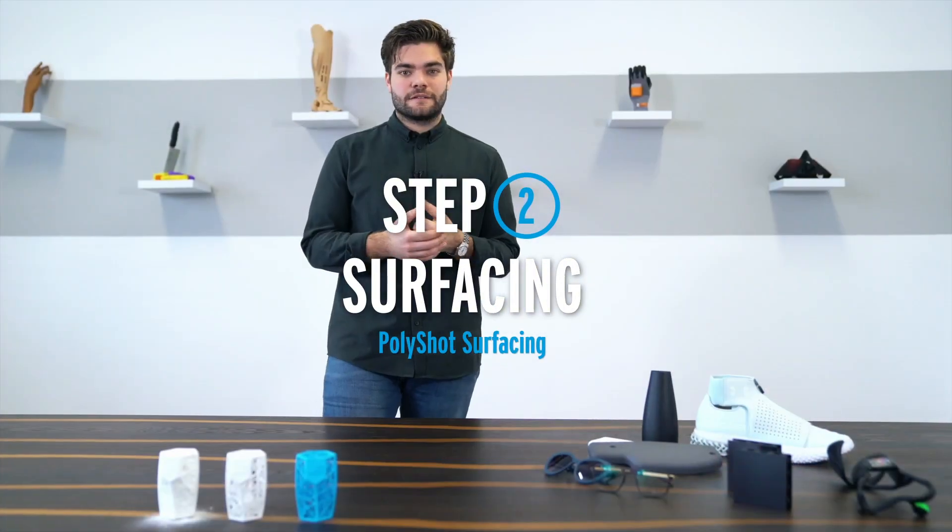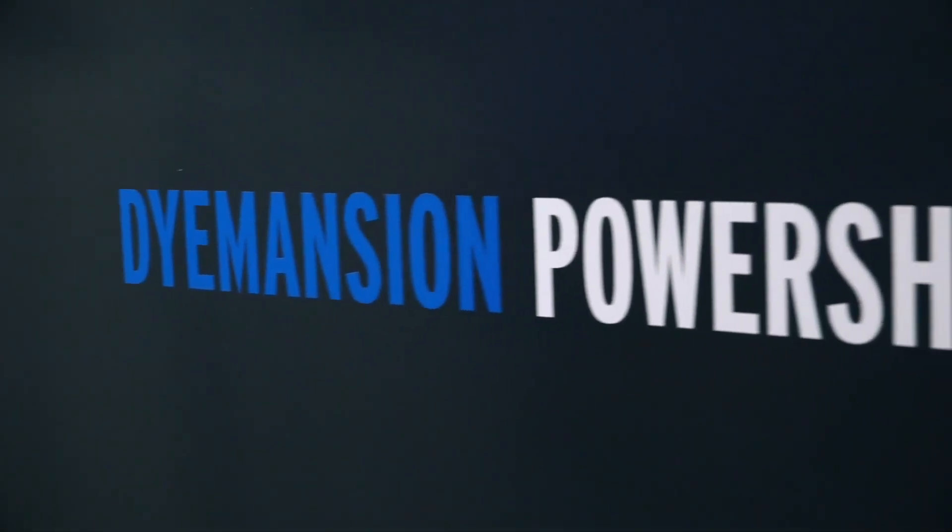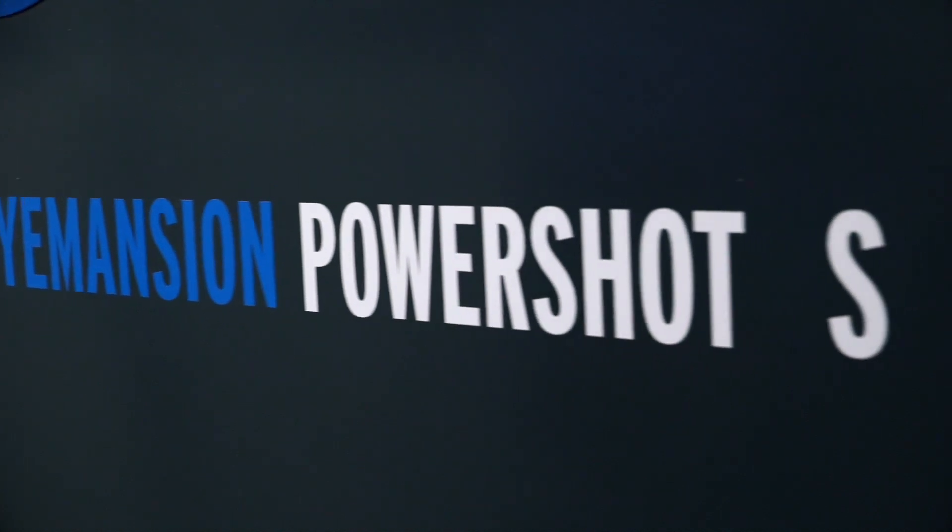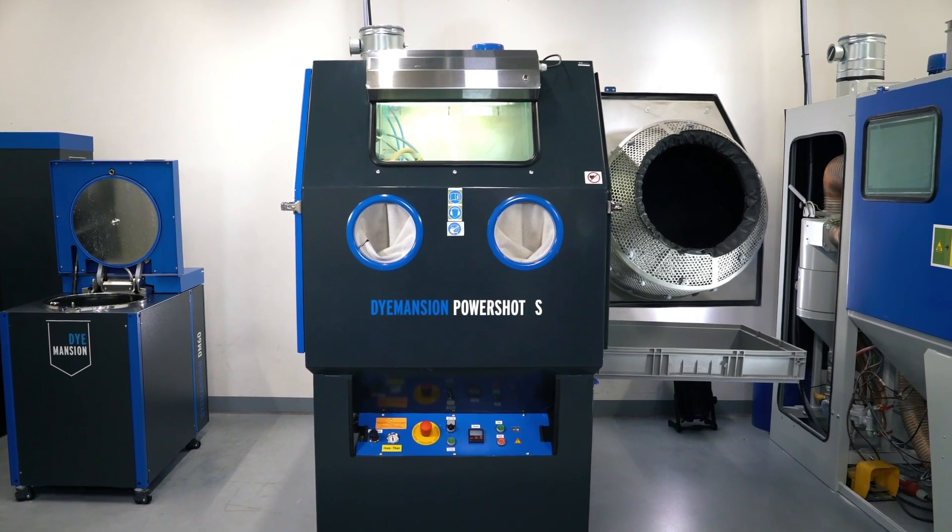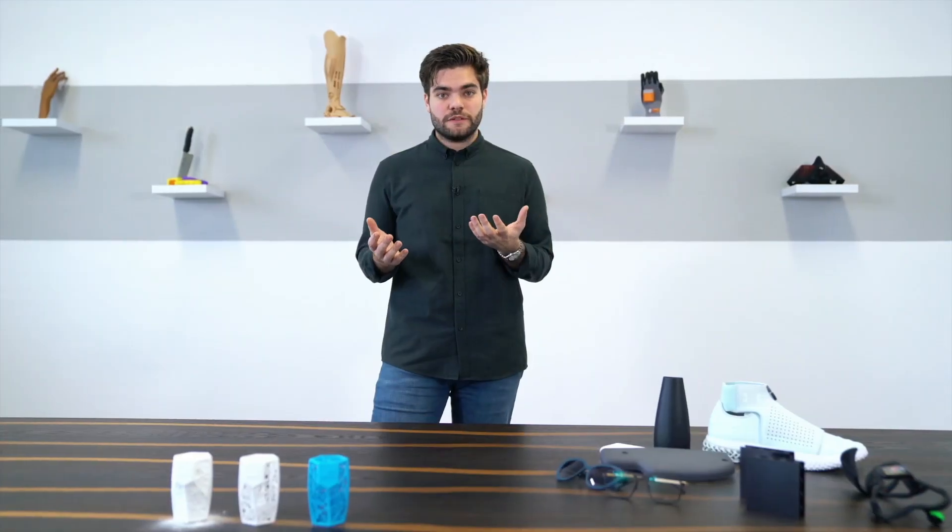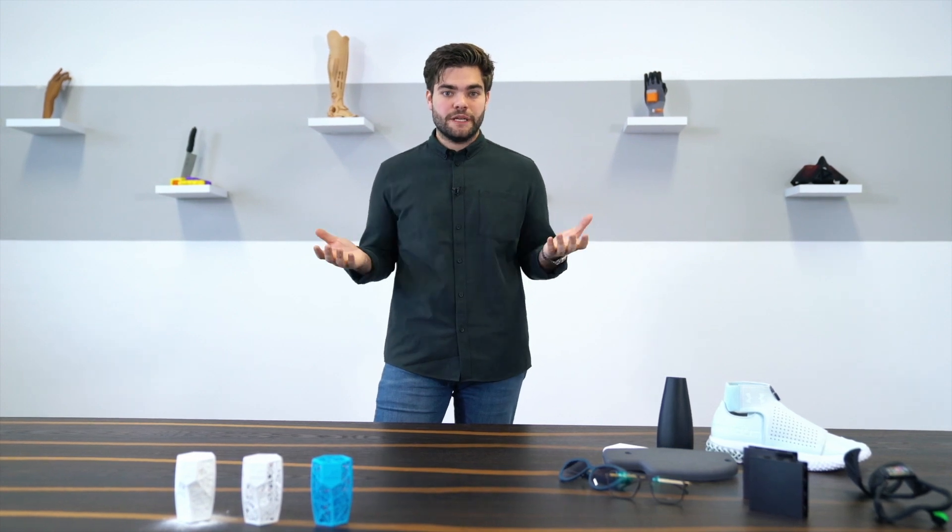The next step after cleaning is surfacing. Therefore we developed the PowerShot S system and the proprietary blasting process called PolyShot surfacing. Again, it's a blasting process with a 10-minute cycle time, but with a different medium.